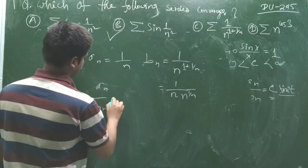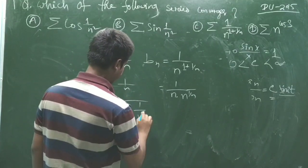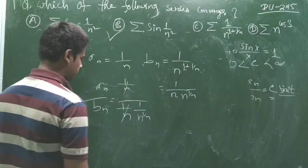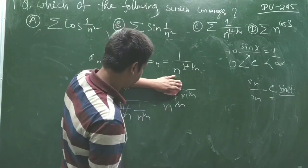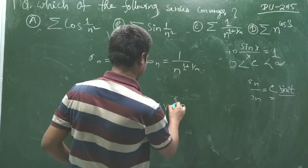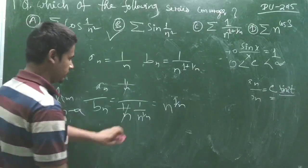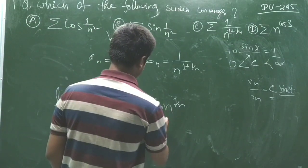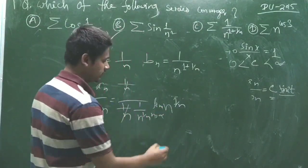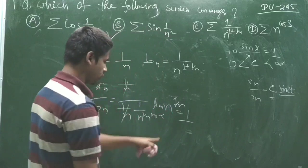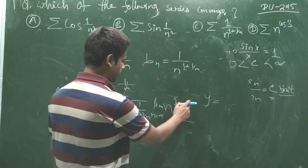Computing aₙ/bₙ: the (1/n) terms cancel, leaving n^(1/n). Taking the limit as n tends to infinity of n^(1/n) — we know this limit equals 1, which you can solve by taking the logarithm.